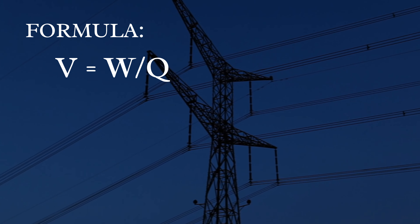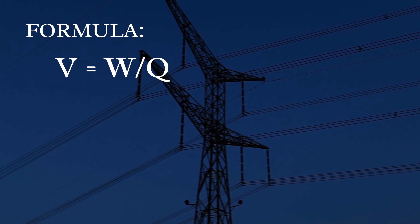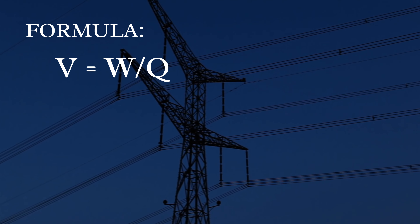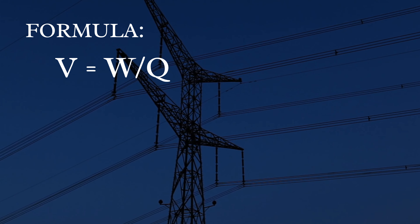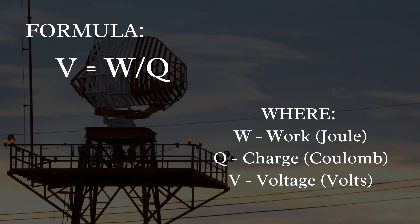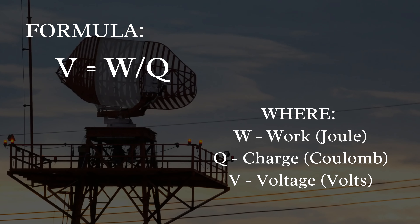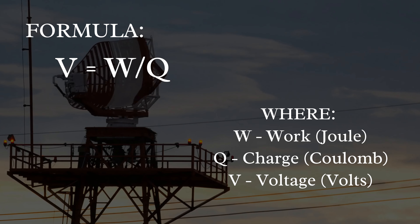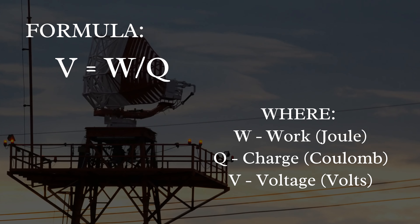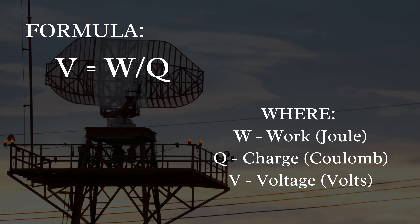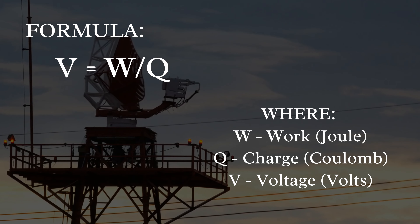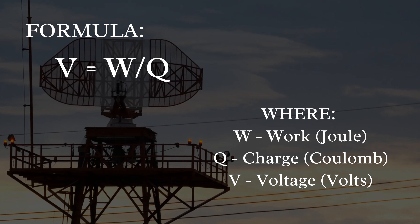We can find voltage through the formula: Voltage (V) equals W over Q, where W is the work done measured in joules, and Q is the charge.